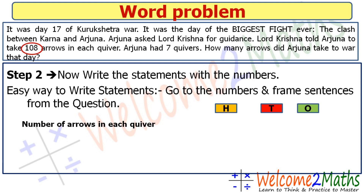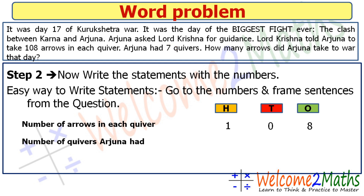Now let's write the number 108. Starting from the ones place: 8 comes at ones, 0 at tens, and 1 at hundreds. Now the next number is the smaller number, 7. What is 7? Arjuna had seven quivers, so the statement is: number of quivers Arjuna had. We write 7 at the ones place since it is a single-digit number.